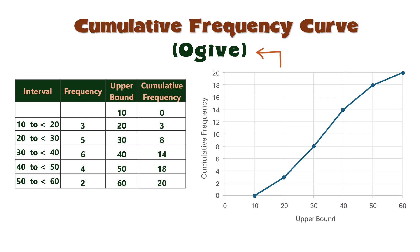From the graph, we can easily see that the number of observations below 30 is 8 and estimate that about 16 observations lie below 45. We can also determine that there are 6 observations between 30 and 40 by subtracting 8 from 14.